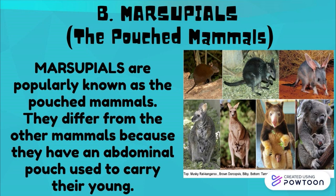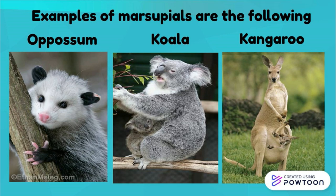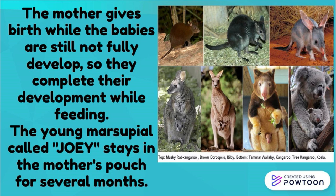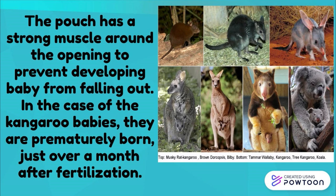Marsupials are popularly known as the pouch mammals. They differ from other mammals because they have an abdominal pouch used to carry the young. Examples of marsupials include opossum, koala, kangaroo, wombats, and Tasmanian devils. The mother gives birth while the babies are still not fully developed, so they complete their development while feeding in the pouch. The young marsupial, called a joey, stays in the mother's pouch for several months. The pouch has a strong muscle around the opening to prevent the developing baby from falling out. In the case of kangaroo babies, they are prematurely born just over a month after fertilization.